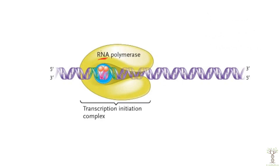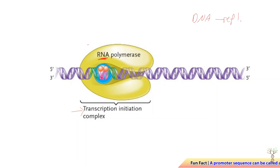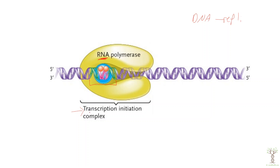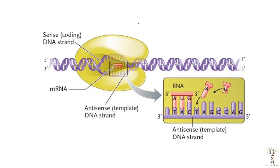RNA polymerase is the enzyme that transcribes genes into messenger RNA molecules, while DNA polymerase is the enzyme that replicates DNA. RNA polymerase has to find a promoter sequence, and transcription factors — such as steroid hormones like testosterone — also bind and help attract the RNA polymerase to the promoter region. RNA polymerase itself will open up the DNA.